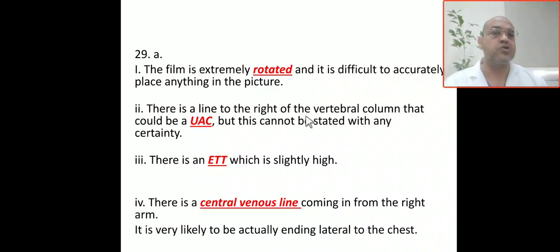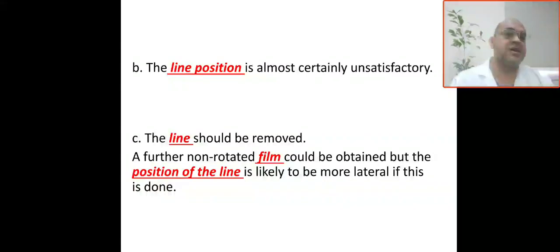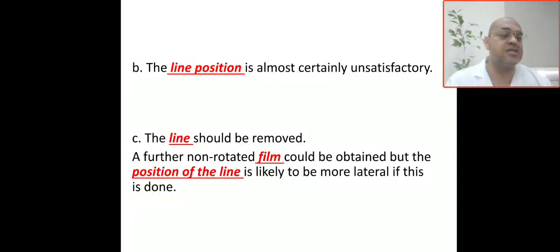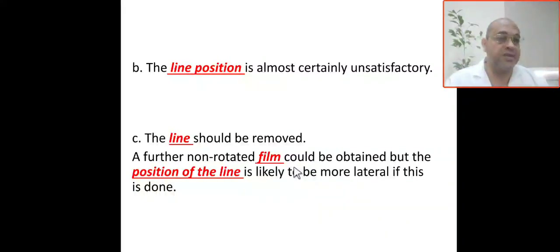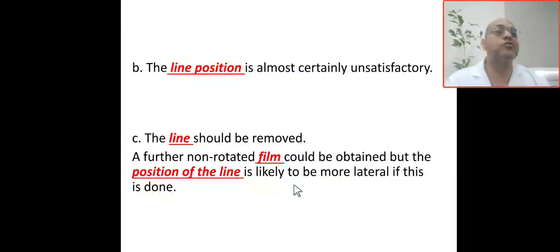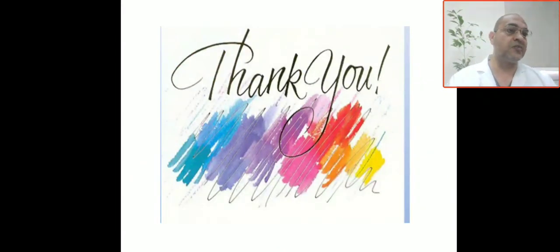The central venous line comes from the right side and is likely ending in the lateral aspect of the chest, which is unsatisfactory. What will you do? You have to remove this line, insert another one, and take another X-ray — a non-rotated film. With a proper film, the position of the line is likely to be shown as more lateral.